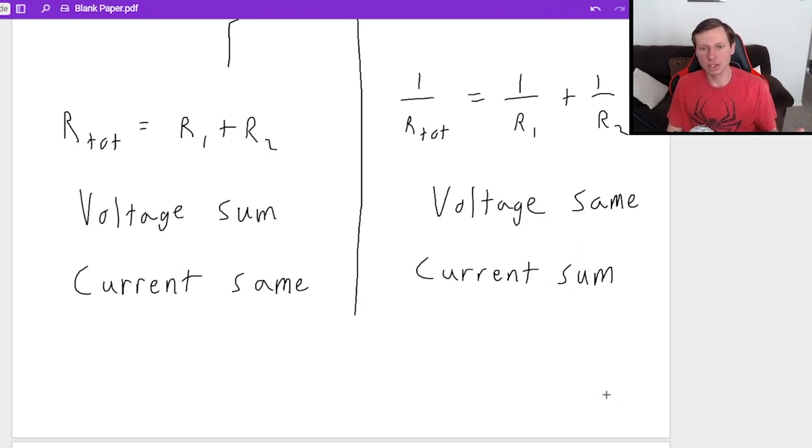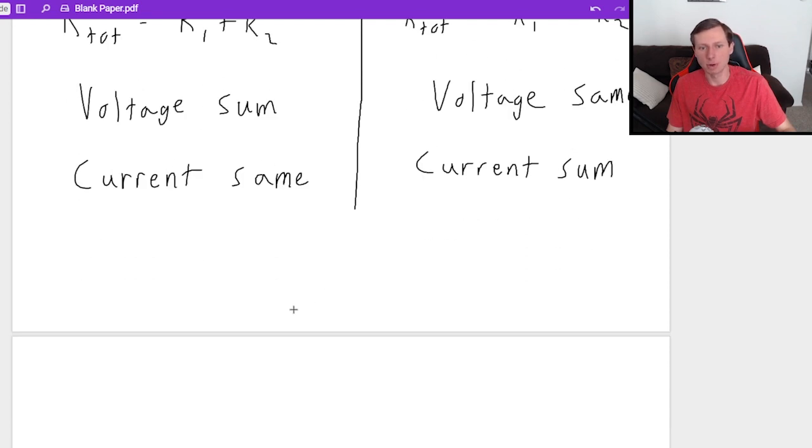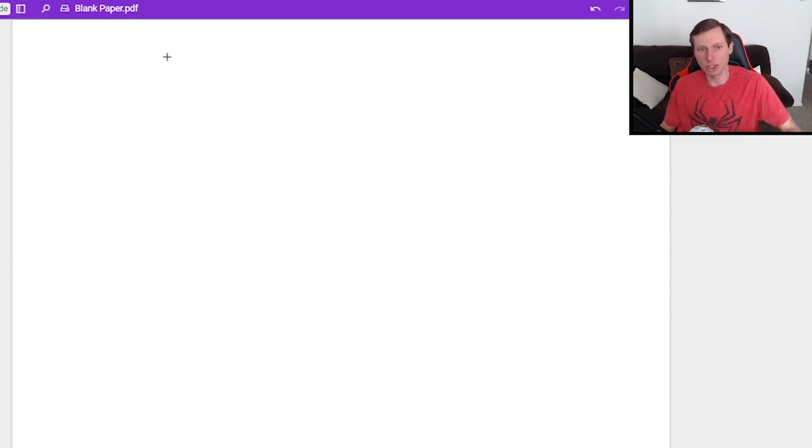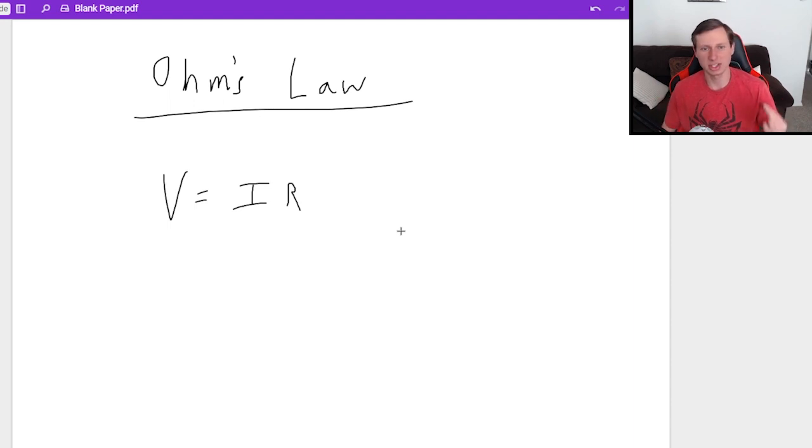And that's everything you need to know in terms of series versus parallel. Now the only other thing, there's two more things we need to know, and that first one is probably the most important equation in all of DC circuits, and that's Ohm's law. Ohm's law says V equals I times R. It's the most famous equation in all of DC circuits. The voltage is equal to the current times the resistance. Now there's two ways you can use this equation.